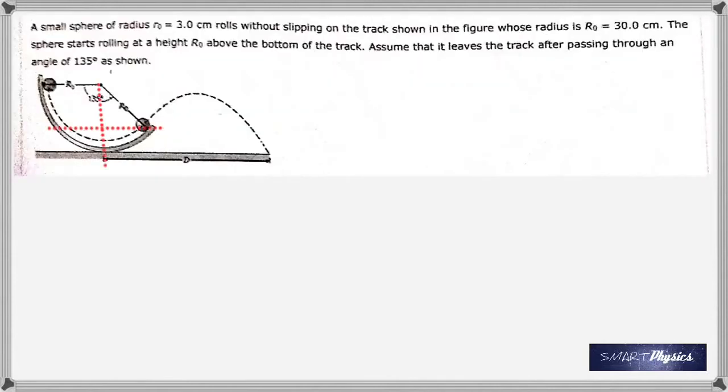Good morning, here's a question from the assignment on chapter 10 on rotational motion that was quite difficult for students. I'm working it out here. You have a small sphere of radius 3 centimeters that is rolling without slipping on the track shown.